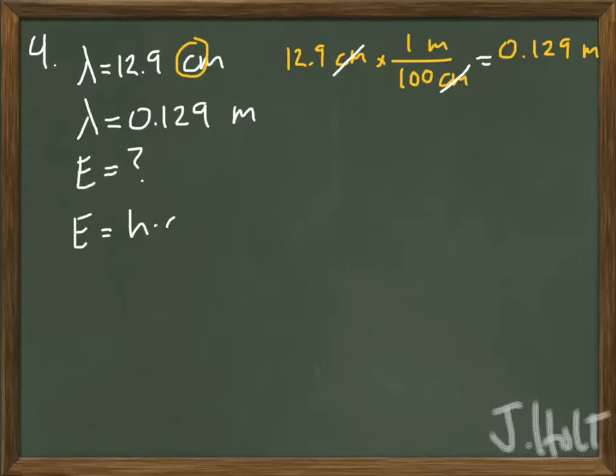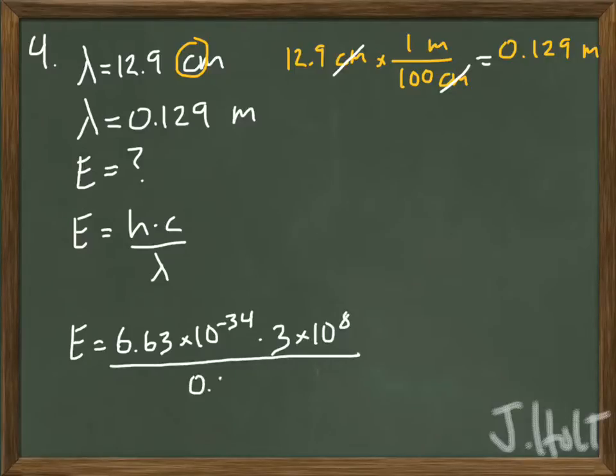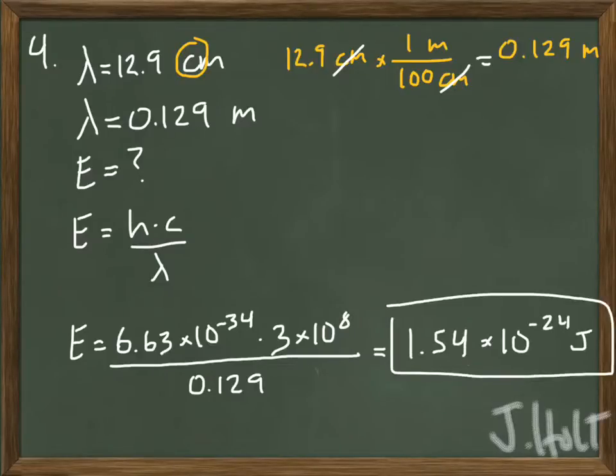I want energy. The equation I can use to find energy is h times c divided by lambda. h is Planck's constant. That never changes. 6.63 times 10 to the negative 34th. c is the speed of light. And lambda is the wavelength that was given in the problem. If you enter this into your calculator, you should get this answer. The unit for energy is joules, abbreviated by the letter J.